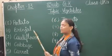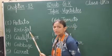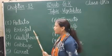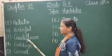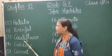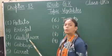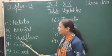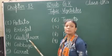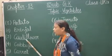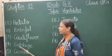Brinjal ko pehle banaya jaata hai aur phir khaaya jaata hai. Next is cauliflower. Cauliflower means phool gobi. Phool gobi ki sabzi ko bhi pehle pakaate hain aur uske baad khaate hain.